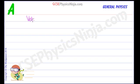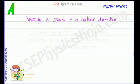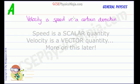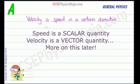Velocity is speed in a certain direction. And so velocity gives us a little bit more information than speed. It tells us how fast the object is travelling, but in a certain direction.